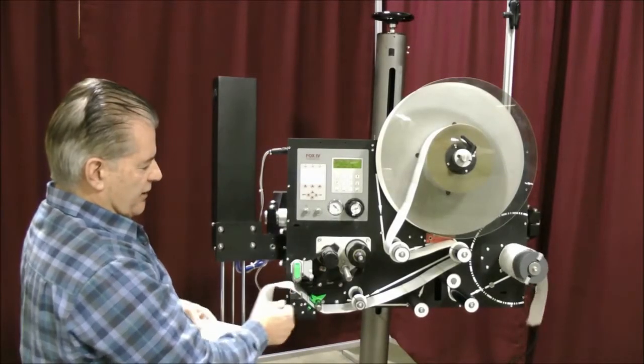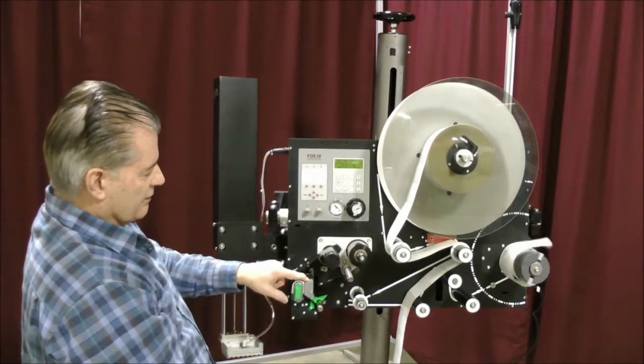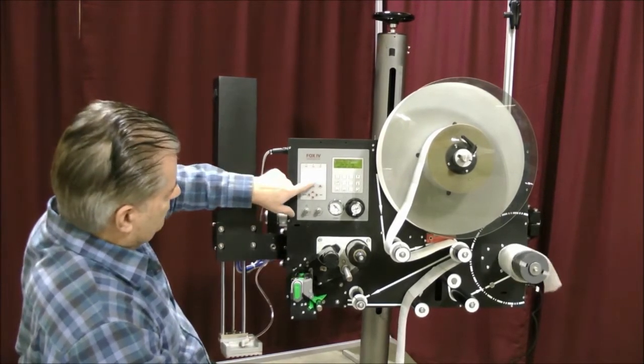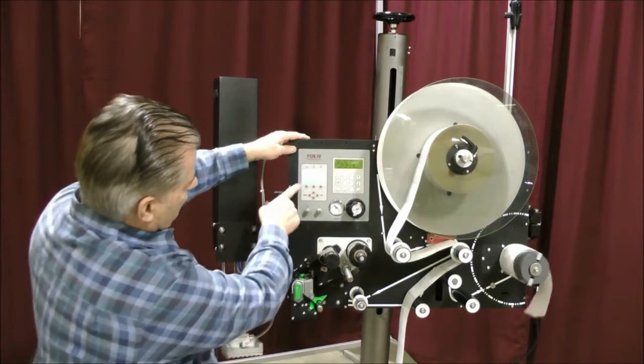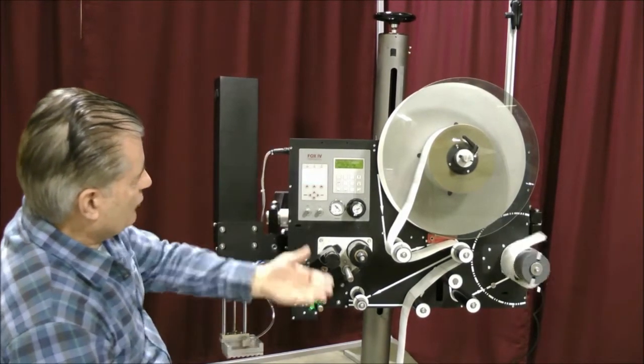Now, you're going to remove the label stock. Push your lever to open your printhead and slide your label off. Close your printhead and then you're going to press the escape button. It's right here. You press escape. You're going through the process.